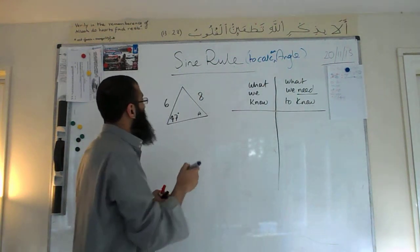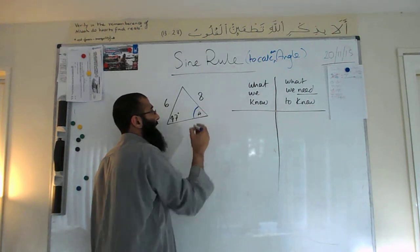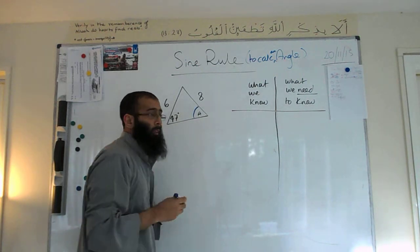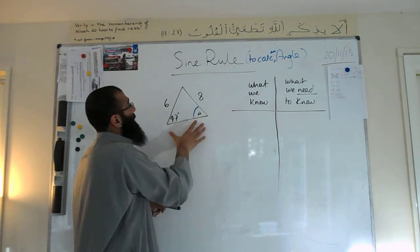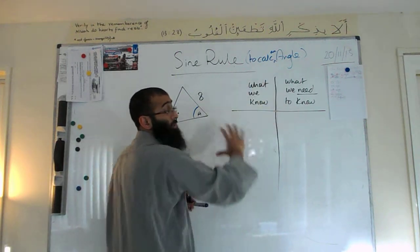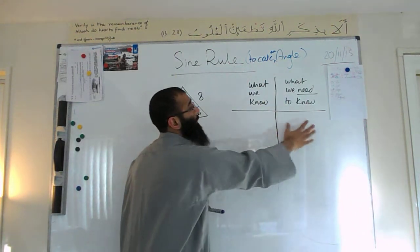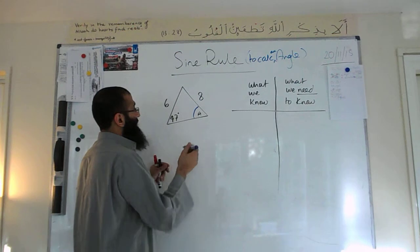So we've got to calculate an angle. This angle that we're really looking for is called A. Whenever we look at this type of question, we make a small table of what we know and what we need to know.